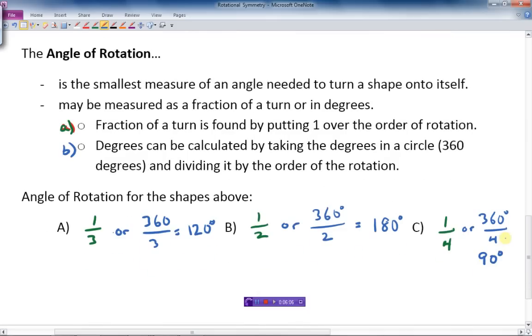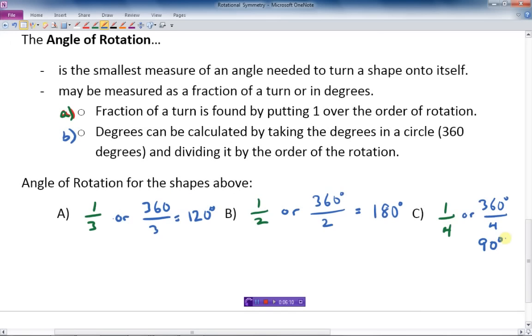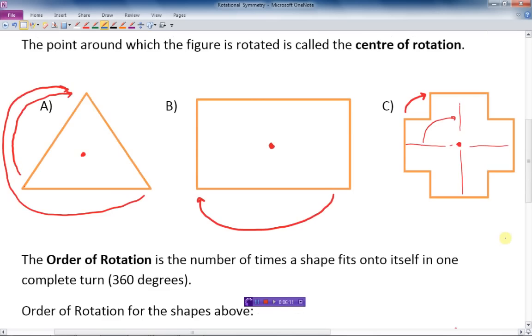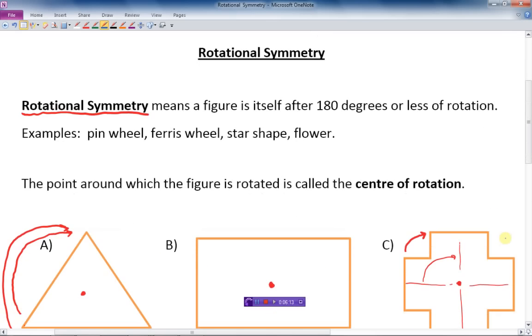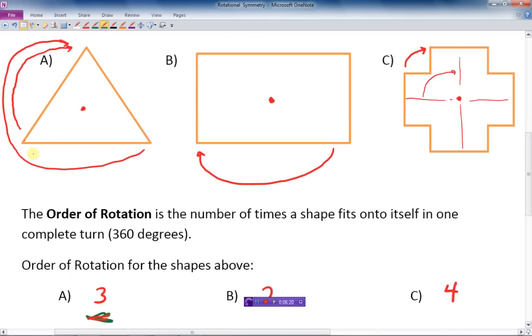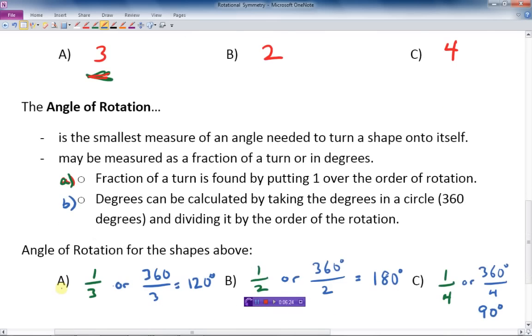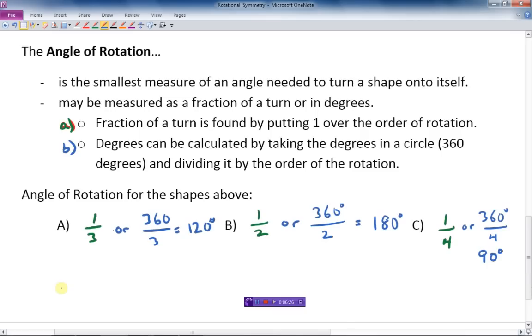So I hope that makes sense. Very quickly, we've gone over those things again. We've talked about rotational symmetry, what that is, center of rotation, and then the order of rotation, which can be used to help us find the angle of rotation, which can be expressed in two different ways: either as a fraction of a turn or as a degree measure.